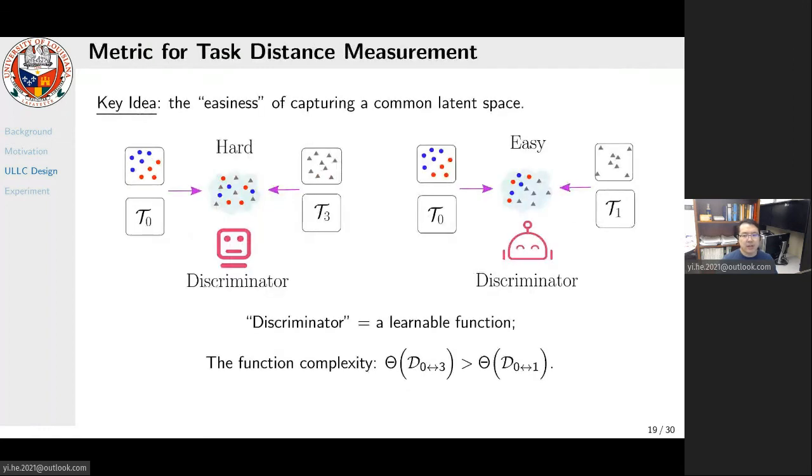The remaining question is how to measure the distance among tasks. Here, our key idea is to quantify the easiness of extracting the latent space where features are aligned. That is, if we train a discriminator that tries to classify the data by their task membership—which means we do not care about the learning target, we simply mix up data from two tasks and classify which data points are from which—then if the discriminator cannot distinguish the data by their membership, we consider the latent space is captured successfully. Clearly, for two similar tasks, this space can be easily captured, so a simple discriminator can do it.